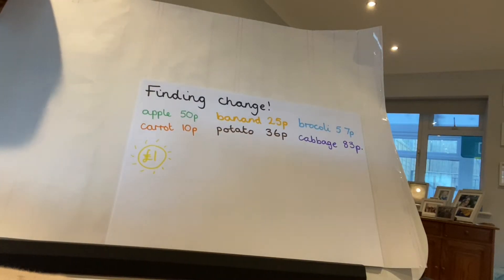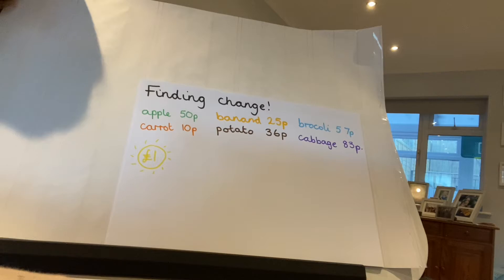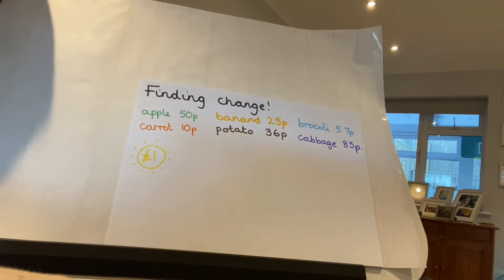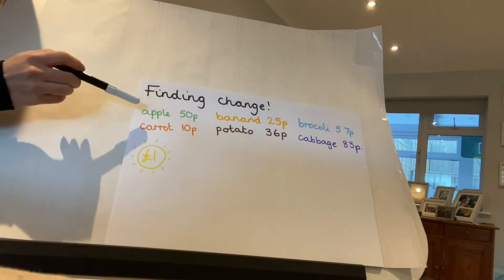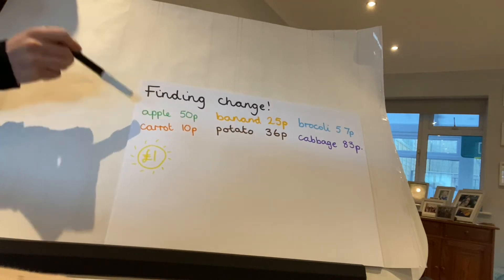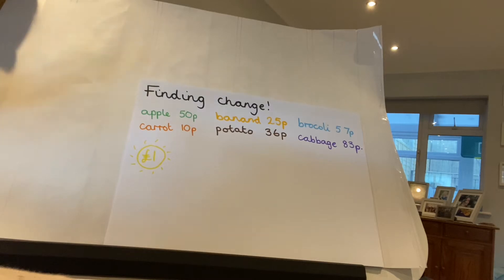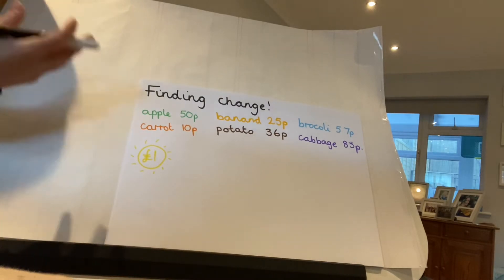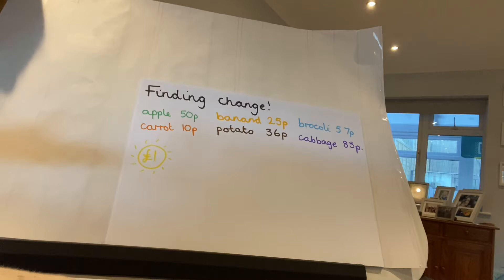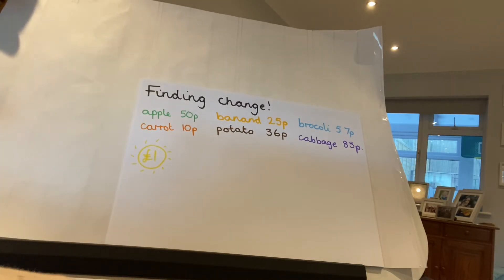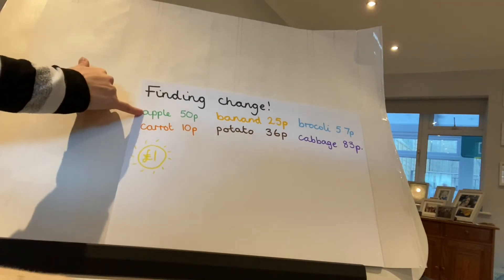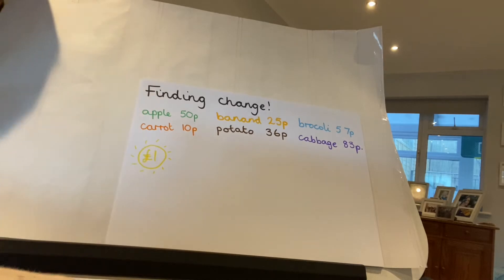Hi Willow class, our final skill of the week is to be able to find change. When we're thinking of change, we're always thinking about the difference between how much something costs and how much you pay for it. Usually if people go into a shop and spend their money, they will have maybe a pound coin or a five pound note — an amount slightly bigger than the cost — so you need to work out how much change you would get back from the shopkeeper.